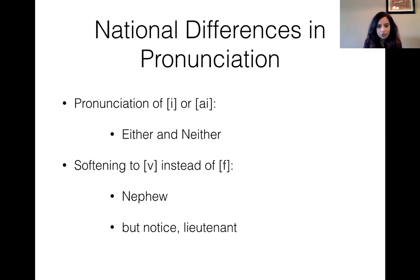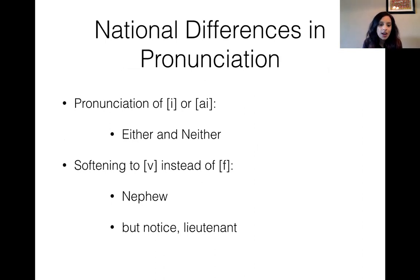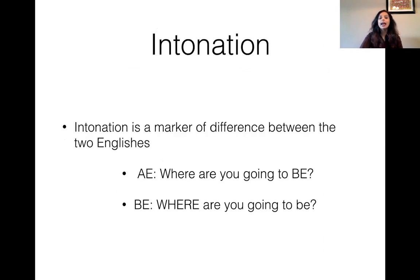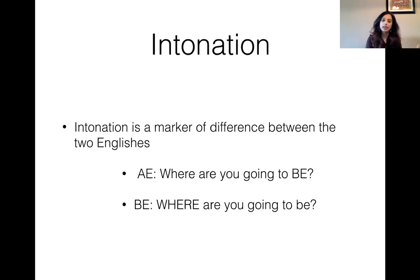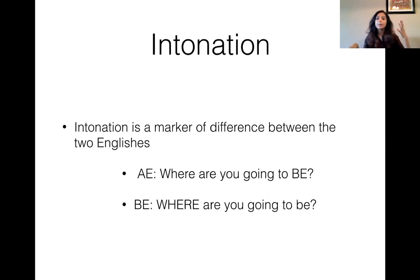Here are some differences in pronunciation. In American English, you can say 'either' or 'neither' — or you can say it either way. There's also softening of the 'v,' so 'nephew' instead of 'nef-you.' But you say 'lieutenant' and I say 'lef-tenant' — there are differences in pronunciation. There are also differences in intonation: in American English, the intonation is always at the end of the sentence — 'Where are you going to be?' — whereas in British English it's at the beginning: 'Where are you going to be?' American English intonation is always at the end; British English is always at the beginning.